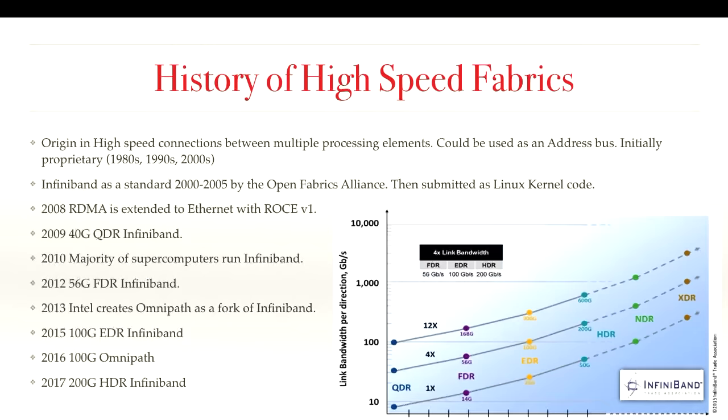History of high-speed fabrics: originally they were only used to connect multiple processing elements as an address bus. Initially these were proprietary in the 1980s, 1990s, and 2000s. At some point, all the vendors realized there was a huge effort here and it would be beneficial to come up with a common standard to avoid duplicating efforts and share common cabling and software. So they formed the Open Fabric Alliance around 2003–2005 and constructed software and standards on how such an interconnect would work. The resulting code was submitted to the Linux kernel and called the InfiniBand subsystem.